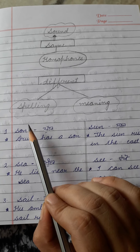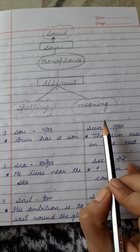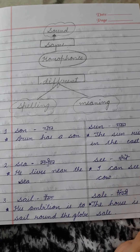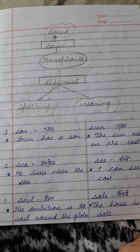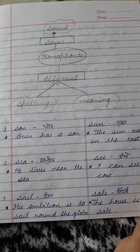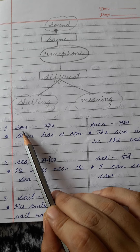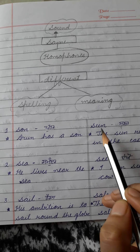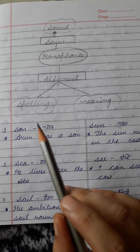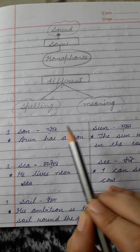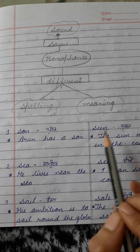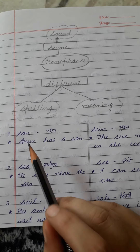First one is 'son' or 'sun'. Can you hear any difference in the sound of both of them? No. S-O-N means putar (son). S-U-N means suraj (sun). Can you see the difference of spellings of both of them? Yes.